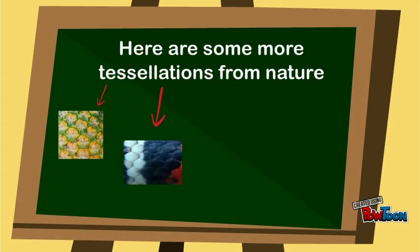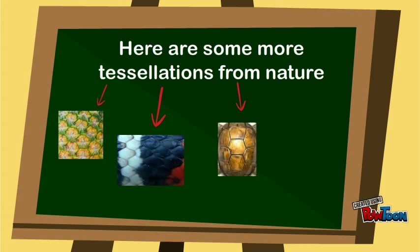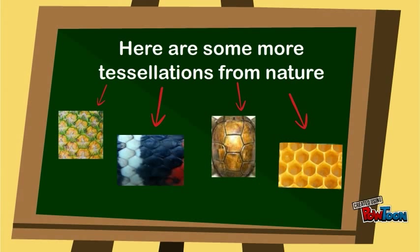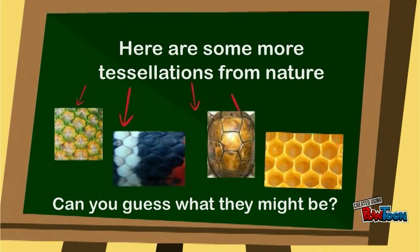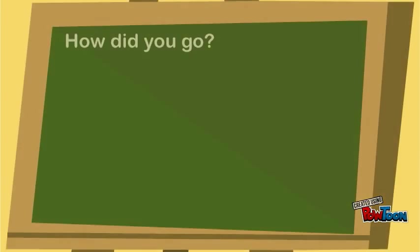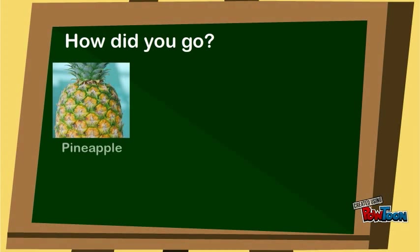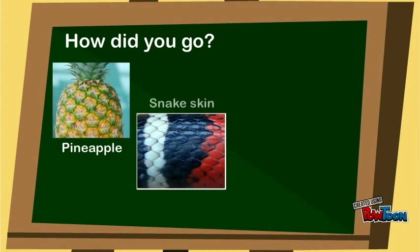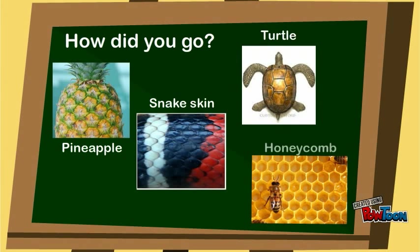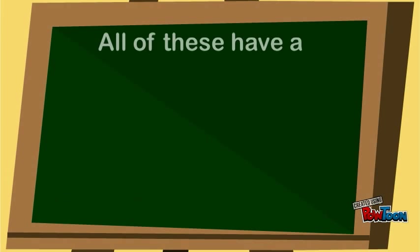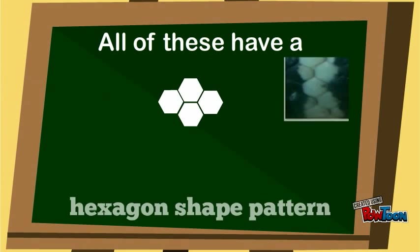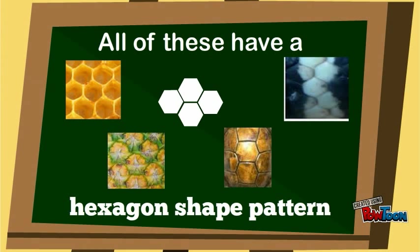Here are some more tessellations from nature. Can you guess what they might be? Pineapple, snakeskin, turtle, honeycomb. Fantastic! All of these have a hexagon shape pattern.